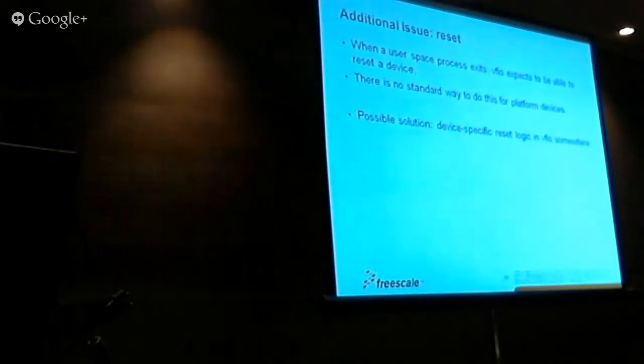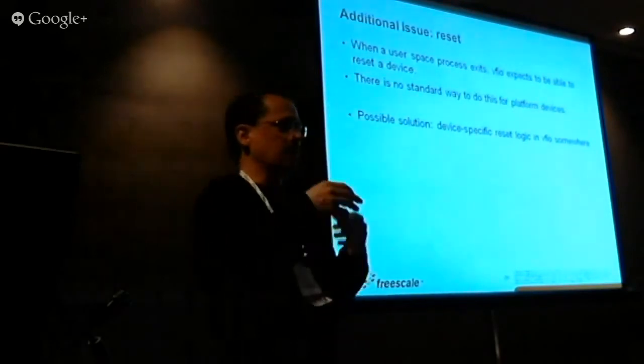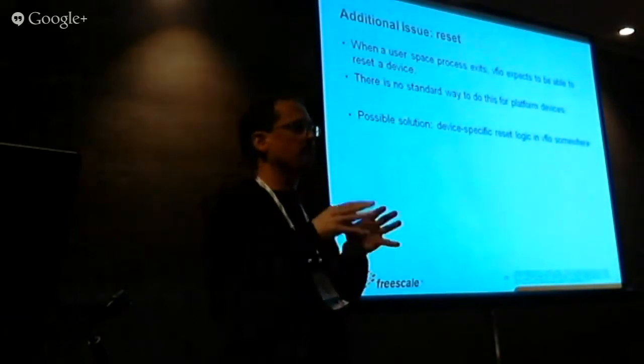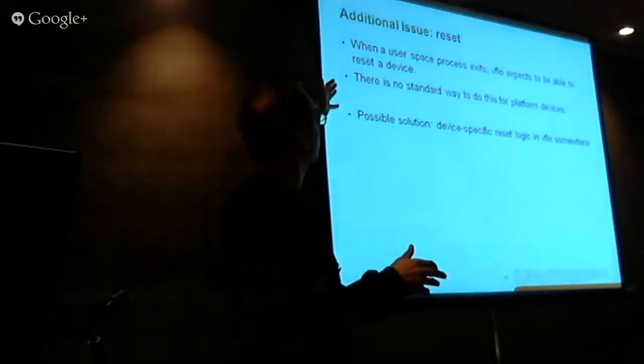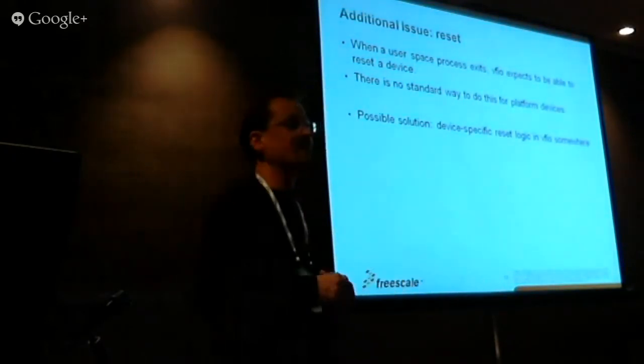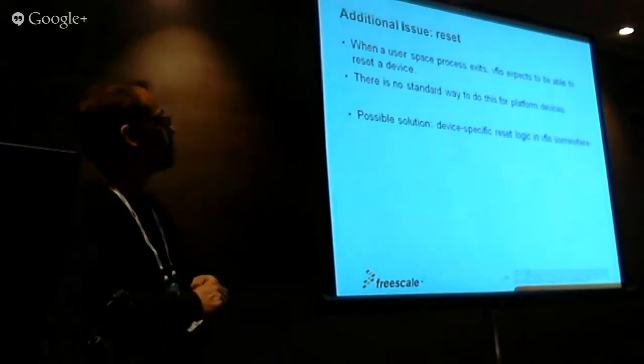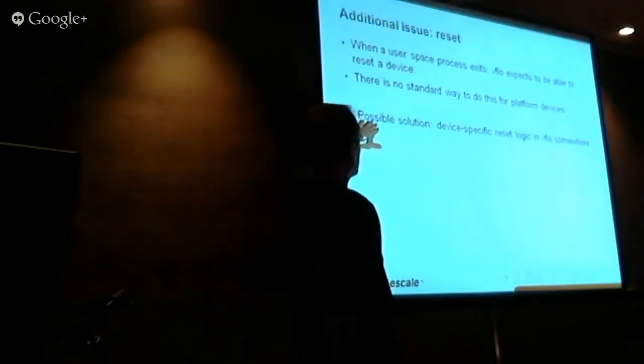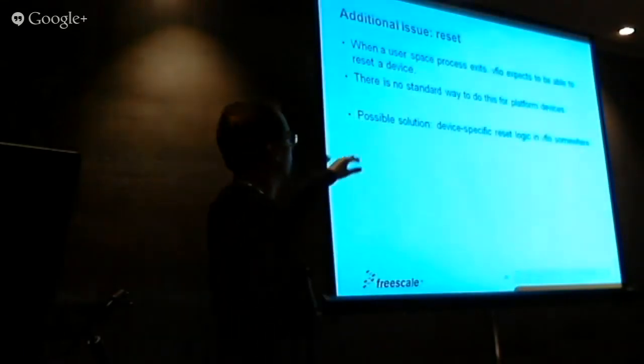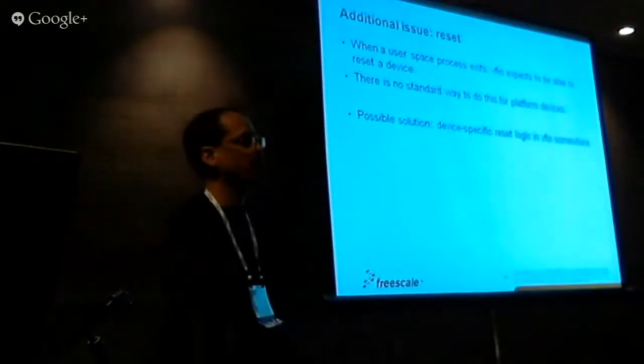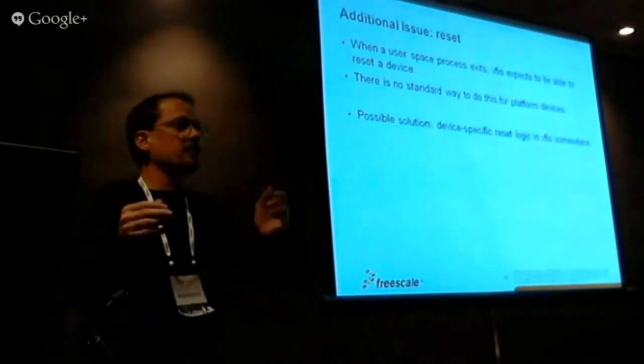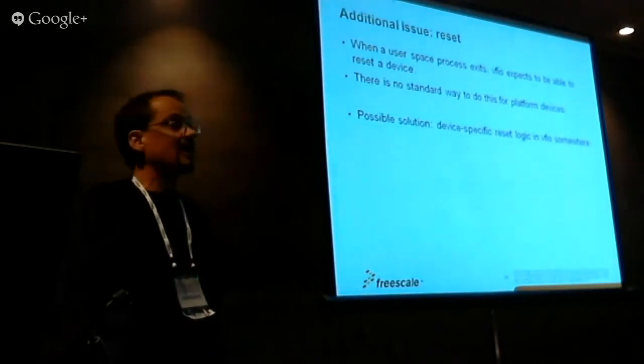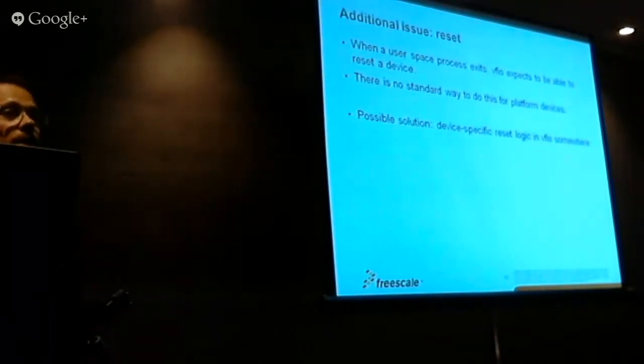On VFIO PCI, if a process that has one of these devices died or was killed or something like that, when the file descriptor gets closed, the device gets reset. We're not on a standard bus, so there's no standard way to reset. You probably need specific logic in VFIO to do reset, for example for a DMA engine. If the application dies, we have to have a specific routine for the DMA to properly reset it because there's really no other way to do that.